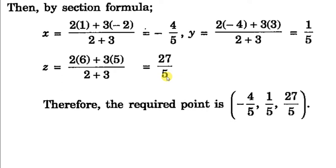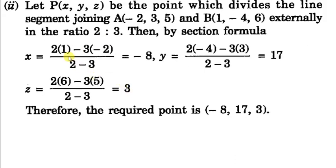When R divides PQ externally, we use minus instead of plus, so x = (2×1 - 3×(-2))/(2-3) = -8. Similarly we can find the y and z coordinates.